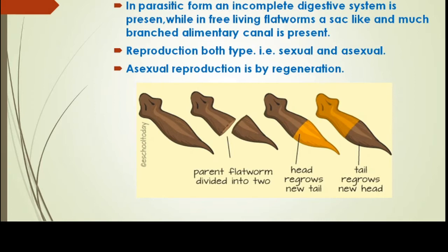In a normal digestive system, there are two openings — one for the entrance of food and another for the exit of waste material. But in Platyhelminthes, only a single opening is present which serves both as a mouth and as an anus, where food enters and where waste material is discharged.